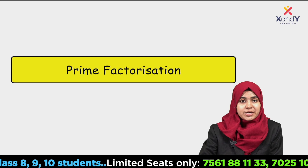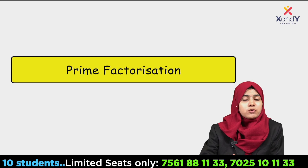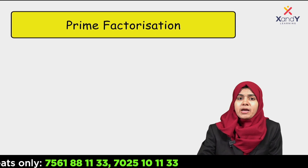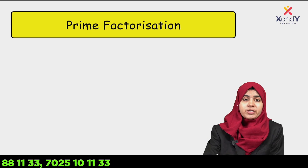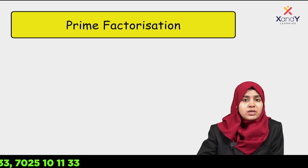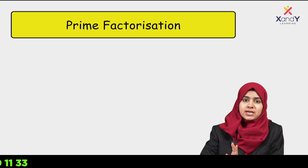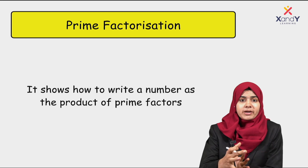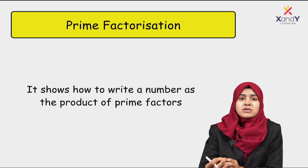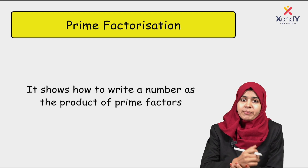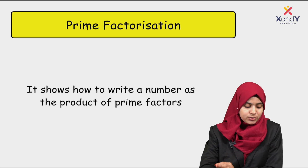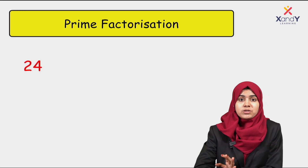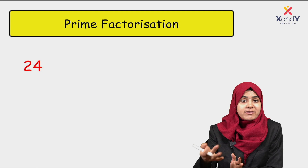The greatest common factor is usually found using the prime factorization method. This is the same method we covered in the third video. We will use the prime factorization method here.